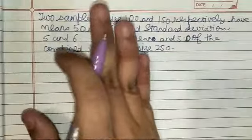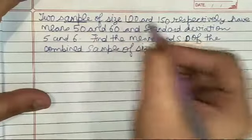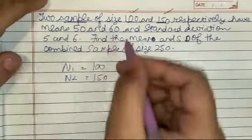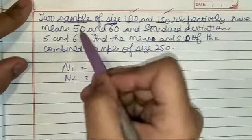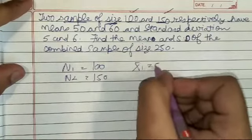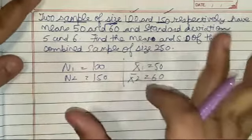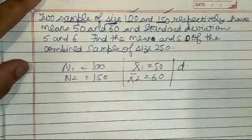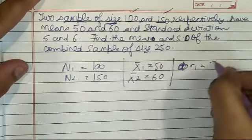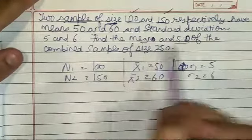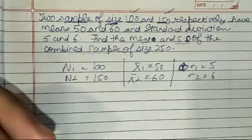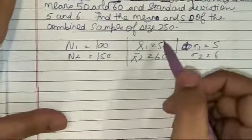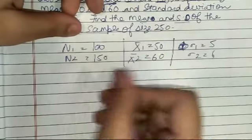Now let's do a question. We have two samples of size n1 = 100 and n2 = 150. Their means are mean1 = 50 and mean2 = 60, and their standard deviations are σ1 = 5 and σ2 = 6. We need to find the combined mean and the combined standard deviation.